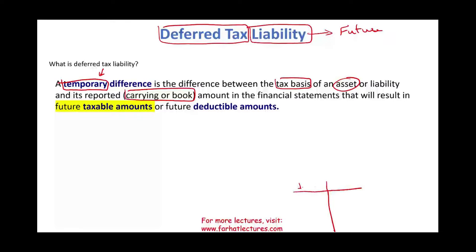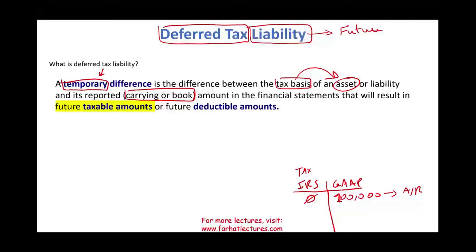We have two sets of books: the IRS (tax) and GAAP. For GAAP purposes, we have an asset — let's assume $100,000 — resulting from an accounts receivable, because we made a sale on account: we debited accounts receivable and credited sales. For tax purposes, we don't record this revenue because it's not cash. As far as the IRS is concerned, there is no accounts receivable, creating a difference of $100,000 between the tax basis of an asset and its book value.